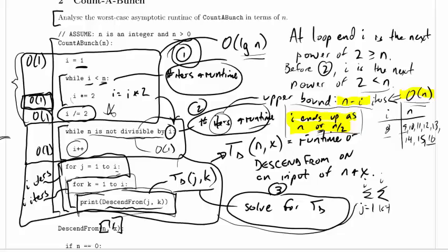I'm going to ignore the amount of time it takes to print. We're constructing whatever value comes from descend from. So however long it takes to print can't possibly be more than the time it takes to construct it in general. So we won't worry about that too much.